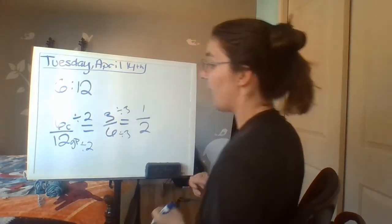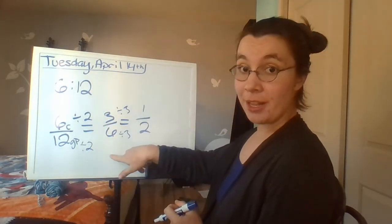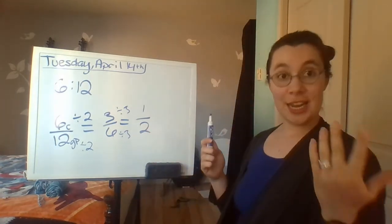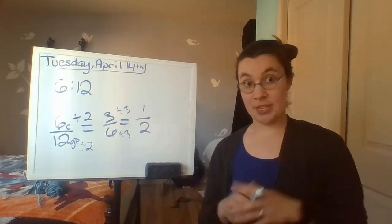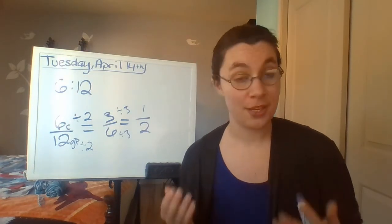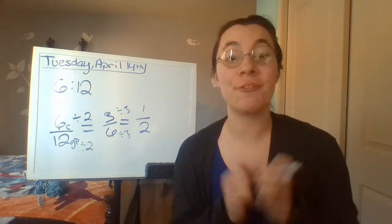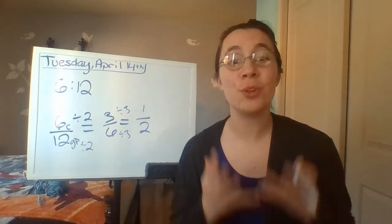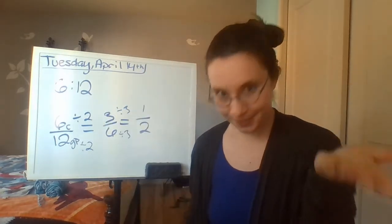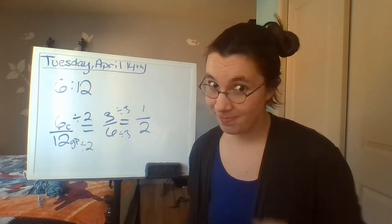If you want to find the greatest common factor right away, you can just find it and divide both numbers at once without taking all those steps. Also, don't forget: the important rule of fractions applies to ratios — what you do to the top, you do to the bottom, and vice versa.